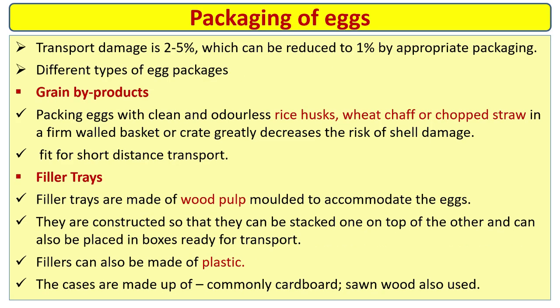Packaging of eggs: transport damage is two to five percent, which can be reduced to one percent by appropriate packing. Grain byproducts packing — packing eggs with clean and orderly rice husks, feed chaff, or chopped straw in a firm basket or crate greatly decreases the risk of shell damage.